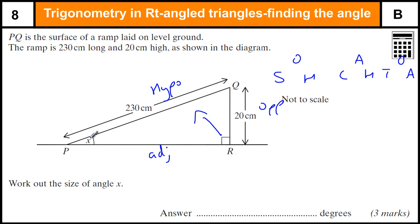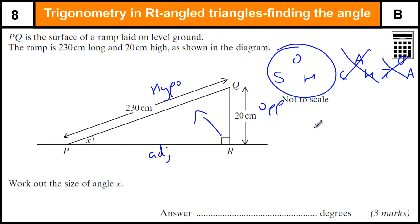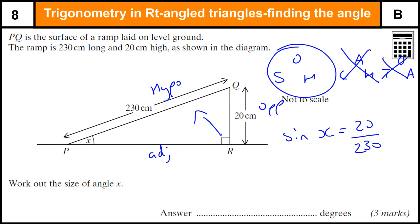We are trying to find x. We know the opposite, we know the hypotenuse, we don't know the adjacent, so we're not using anything with the adjacent in. That leaves me with the sine rule. So the sine of the angle x is the opposite which is 20 over the hypotenuse which is 230.